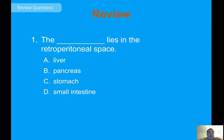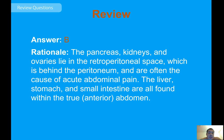Review question: which organs lie in the retroperitoneal space? The answer is B — the pancreas, kidneys, and ovaries lie in the retroperitoneal space, which is behind the peritoneum, and are often the cause of acute abdominal pain. The liver, stomach, and small intestine are found within the true anterior abdomen. Remember this question — it is likely to appear on your quiz or national registry exam.